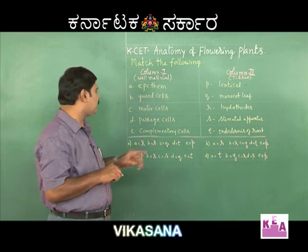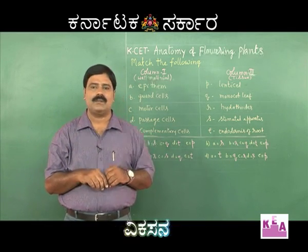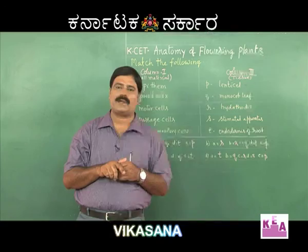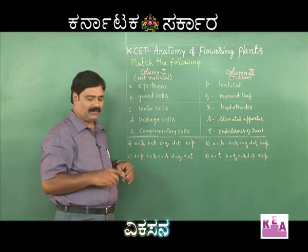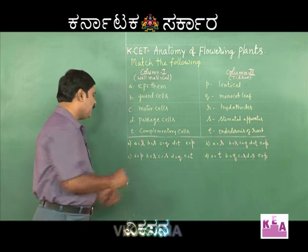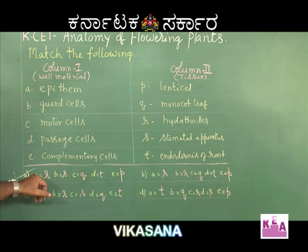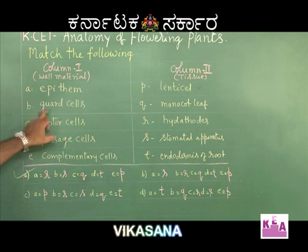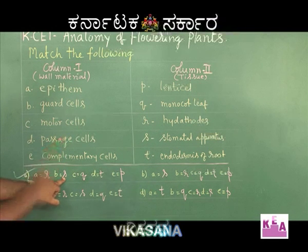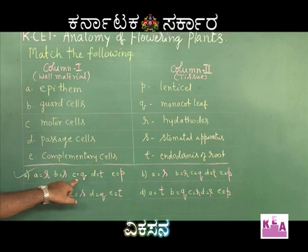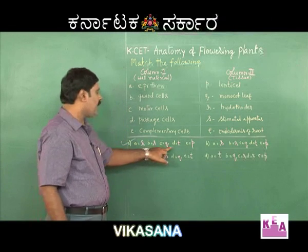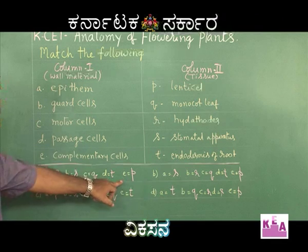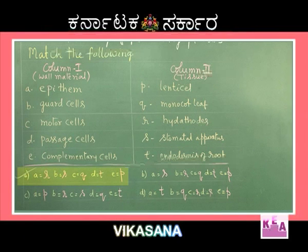Complementary cells are observed in lenticels. Lenticels consist of loosely arranged parenchyma cells and are products of secondary growth. Matching the columns: epithem → hydatodes; guard cells → stomatal apparatus; motor/bulliform cells → monocot leaf; passage cells → endodermis of root; complementary cells → lenticel. The correct option is A.